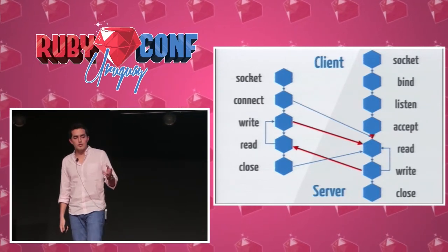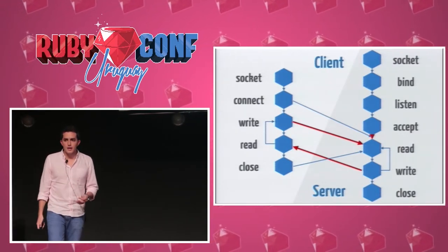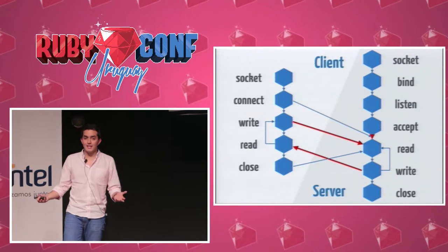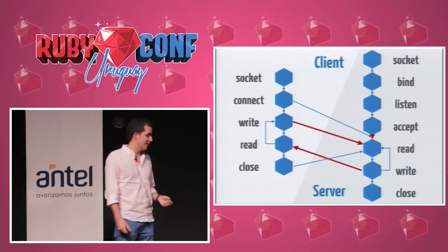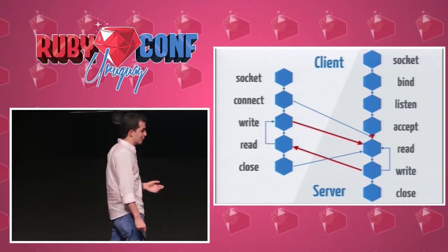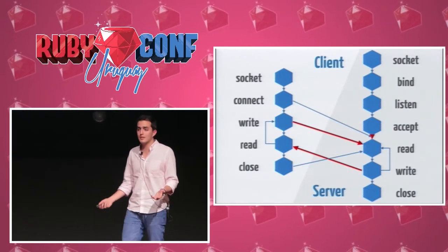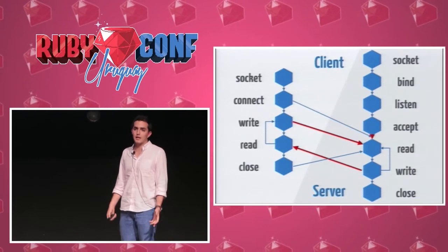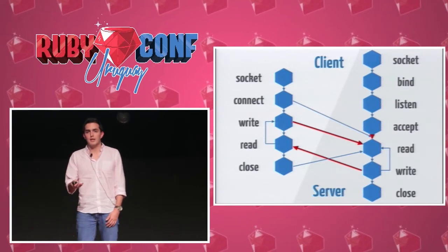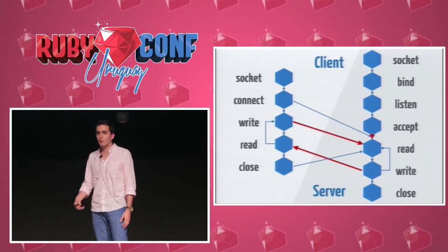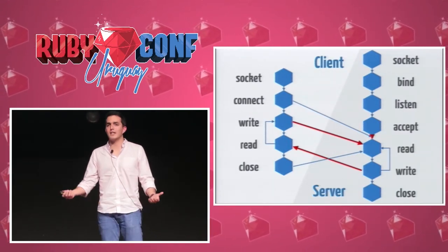Three things are blocking: writing, reading, and the connection itself. All our web servers can be slow and inefficient because while we write we are blocked, while we read we are blocked, and also when managing connections. HTTP works through port 80 — we could only handle one request at a time, which is highly inefficient.